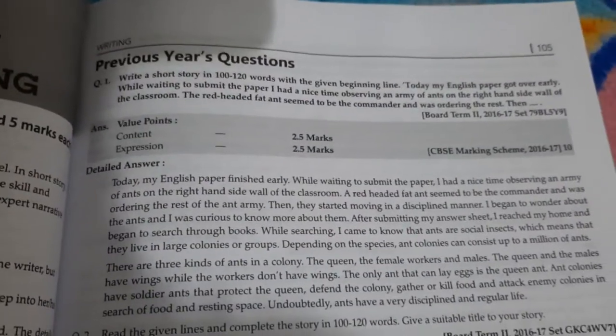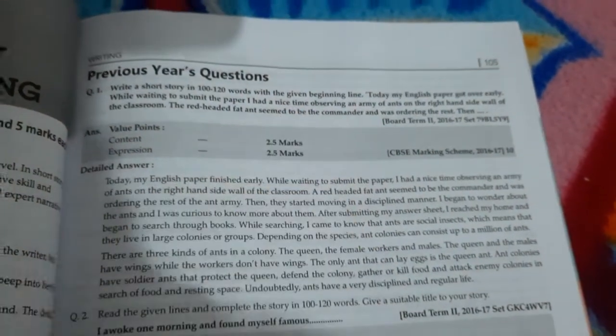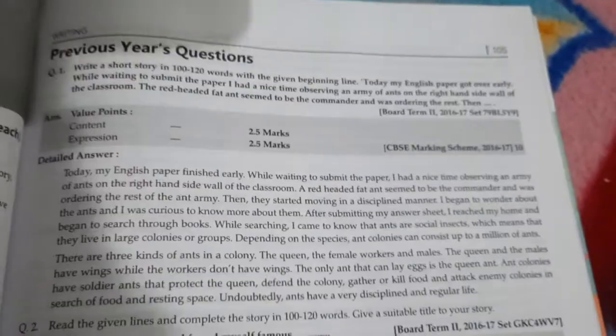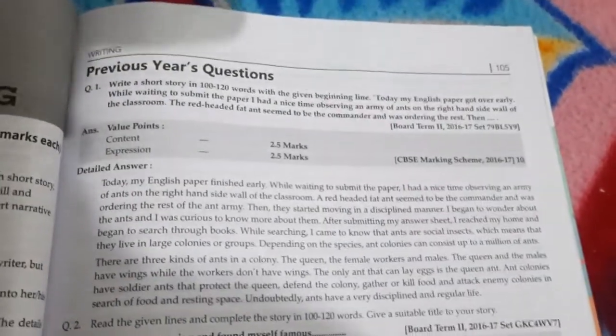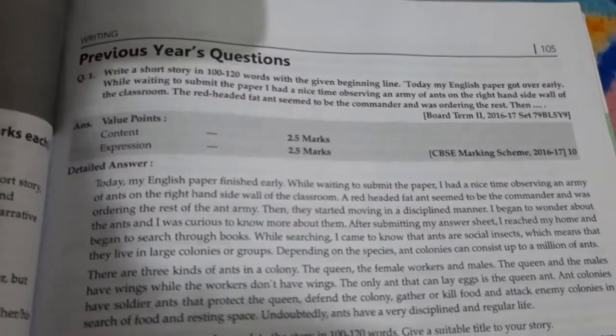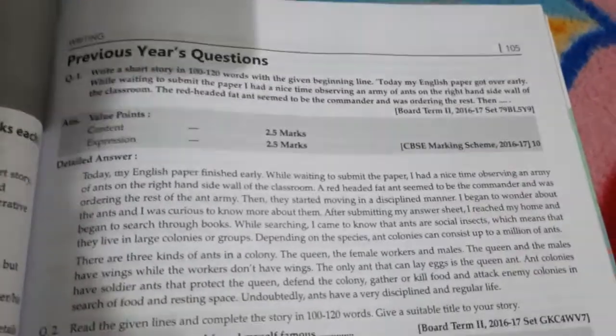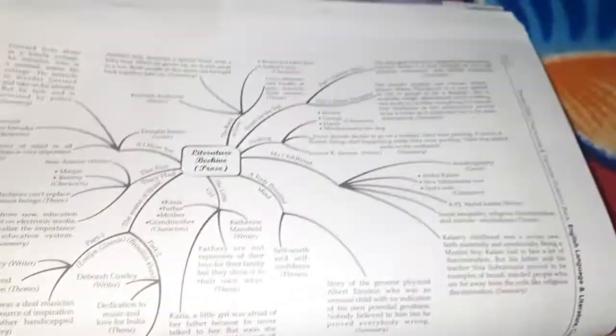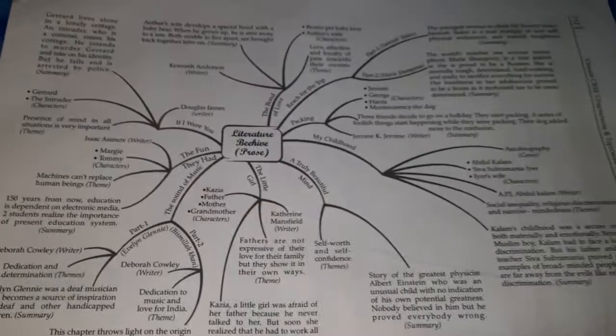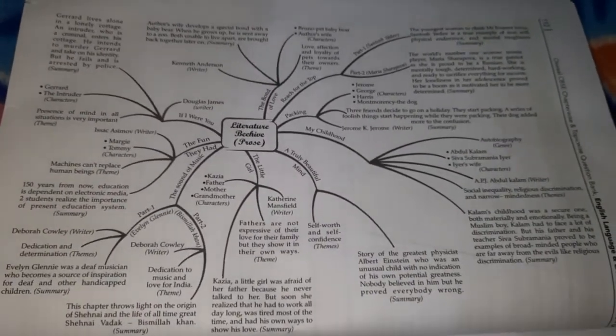The marking scheme covers content and expressions. Previous year questions include: write a short story in 100 to 120 words with the beginning line — 'Today my English paper got over early. While waiting to submit the paper I had a nice time observing an army of ants on the right-hand side wall of the classroom.' The next section is about Beehive and Moments literature.